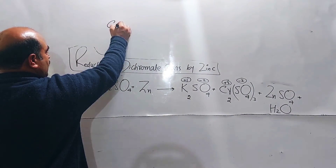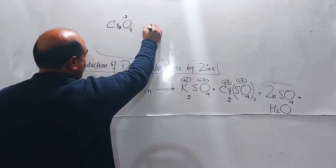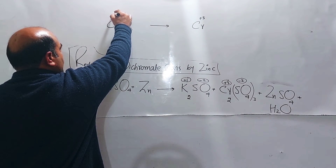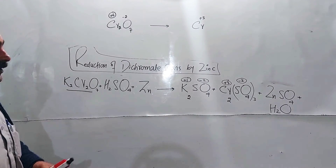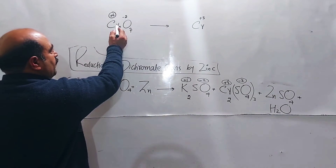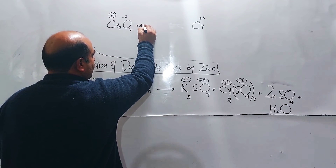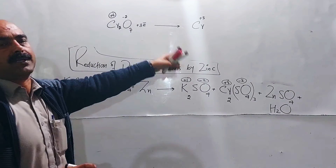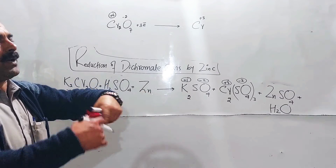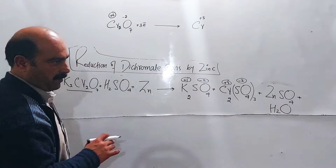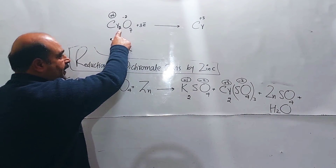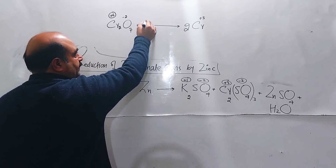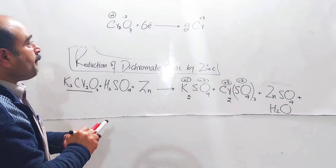This is the ionic state: Cr2O7 minus 2 is the dichromate ion, and the right side is chromium plus three. Chromium is in plus six state in dichromate, and in ionic state plus three on the product side. The reduction ratio shows the oxidizing agent — the electron is removed by the oxidizing agent.